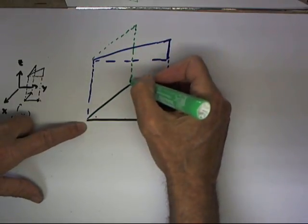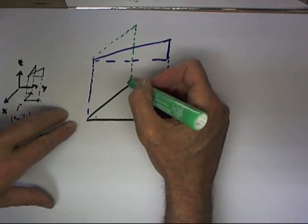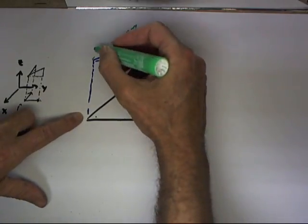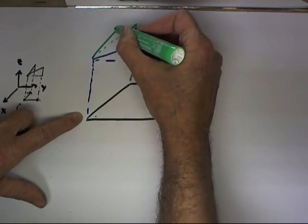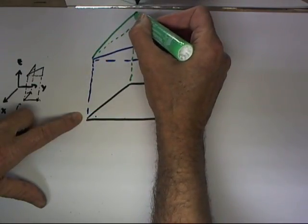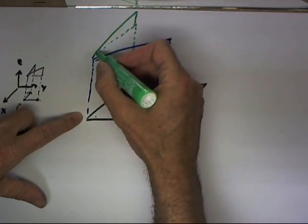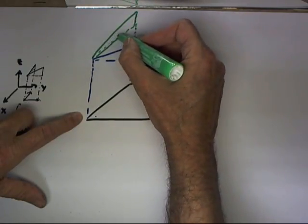But since we're moving in the negative x direction and the x derivative is negative, that's going to result in an increase in the z value.